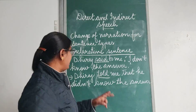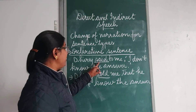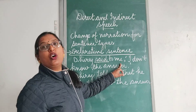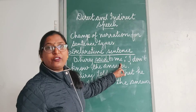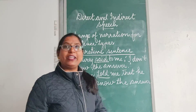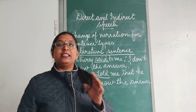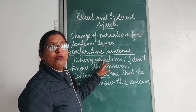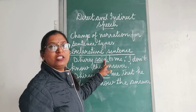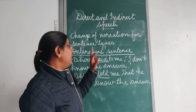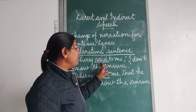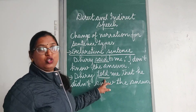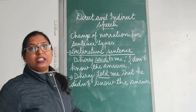This happens only if the introducing verb is followed by an object. If it is not followed by an object, in that case 'said' remains 'said'. So this is the first rule when we change into indirect: your introducing verb is followed by an object, so 'said' is changed to 'told'.